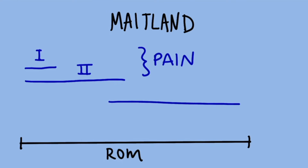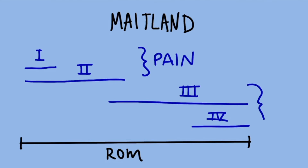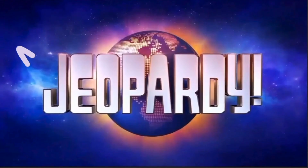A grade three mobilization is a larger movement of the tibia into the full range that it can stretch the capsule, whereas a grade four mobilization is a smaller movement focused at the end of that range. Both of these are used to help stretch that capsule and increase the range of motion of that joint. A grade five mobilization is a high velocity thrust — that's when someone cracks your back or when your patient has to undergo manipulation under anesthesia.